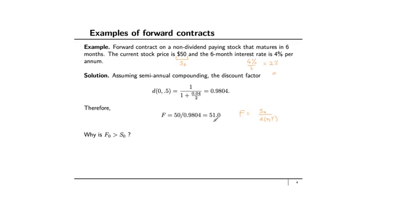Is there an intuitive explanation for why the forward price at time zero must be greater than the current commodity price S_0? The reason is the time value of money. If you bought the underlying at t=0, you'd lose the $50 right away. With a forward contract, you have the ability to buy it in the future at a price specified today, giving you the flexibility to use that money for six months. That time value of money is incorporated into the price F, so F must be strictly greater than S_0.